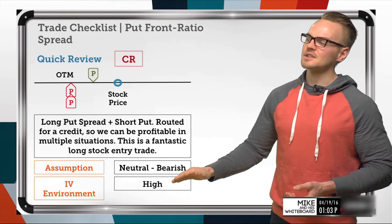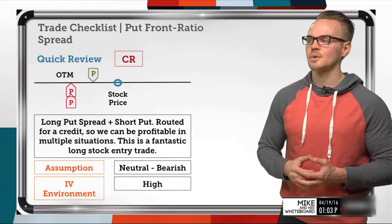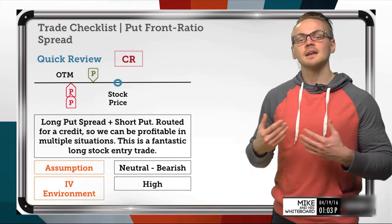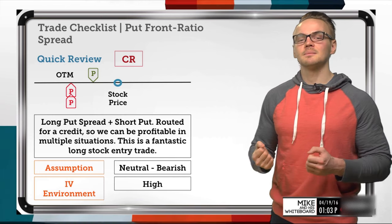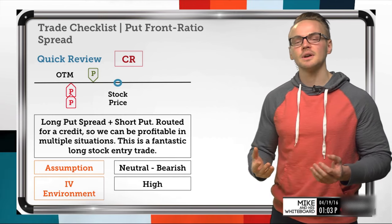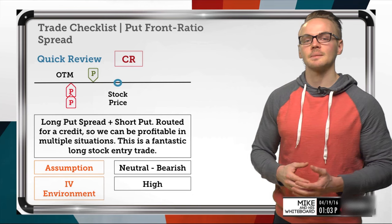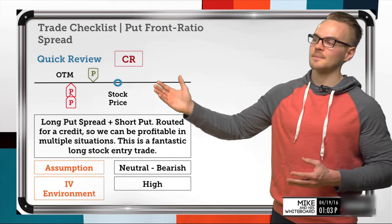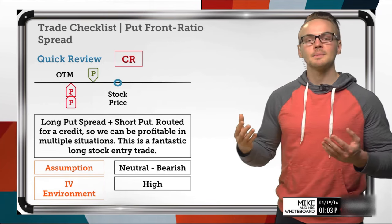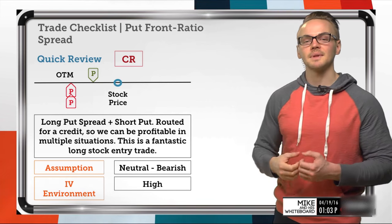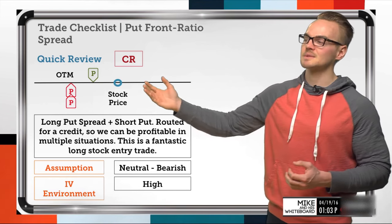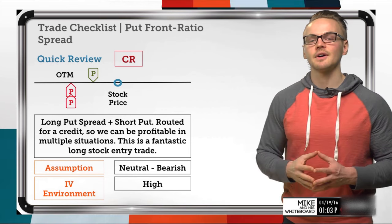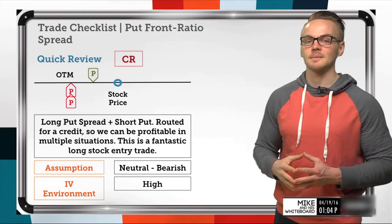Having this strategy in a higher IV environment is optimal because it helps us route the trade for credit and likely get more credit than in a lower implied volatility environment. This benefits us when the stock price doesn't move — we collect more credit — and if the options expire out of the money, we're more profitable in a high IV environment than a low IV environment.